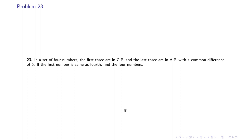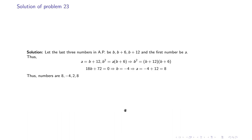Problem 23: In a set of four numbers, the first three are in GP and the last three are in AP with common difference 6. If the first number equals the fourth, find the four numbers. We let the last three be b, b+6, b+12 and the first number be a, so a = b+12. Using the GP condition on a, b, b+6: b² = a(b+6) = (b+12)(b+6). Solving gives b = −4, so a = 8. The four numbers are 8, −4, 2, 8.